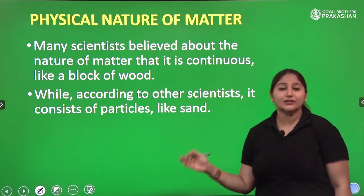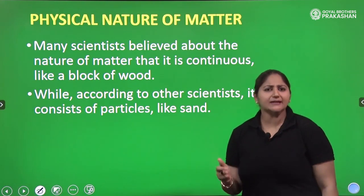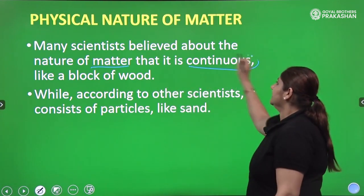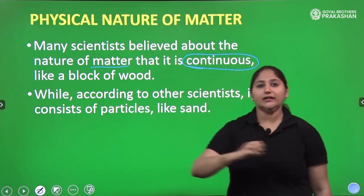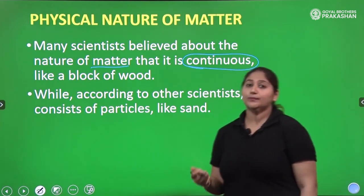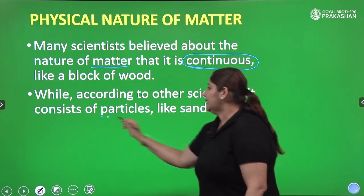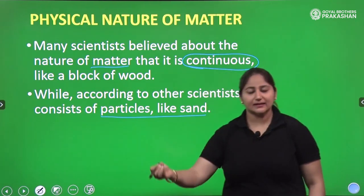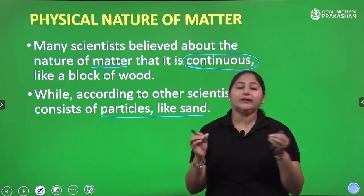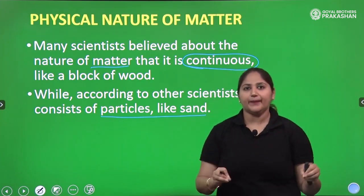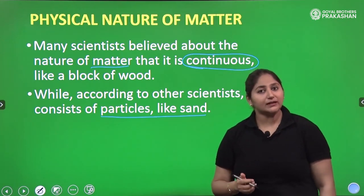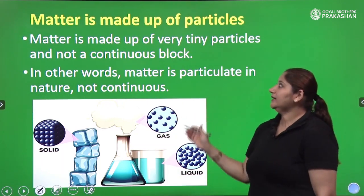For that, let's understand the history of matter. Many scientists believed that the nature of matter is actually continuous — like a block of wood. But there were scientists who believed that matter is actually like sand particles, so it could be continuous or in the form of small particles like sand particles. So what was actually the truth?